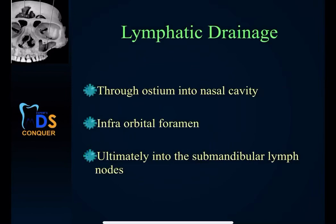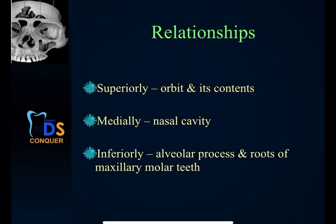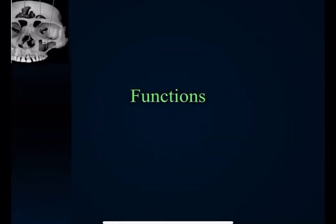The lymphatic drainage passes through the ostium into the nasal cavity and via the infraorbital foramen, ultimately draining to the submandibular lymph nodes. Relations: superiorly to the orbit and its contents, medially to the nasal cavity, and inferiorly to the maxillary molars and the alveolar process of the maxilla.